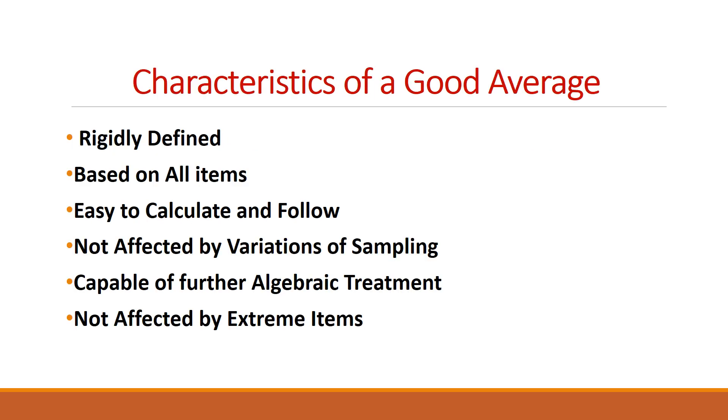Next, let us see what are the features of a good average. A good average is one which is rigidly defined, which means even if different persons are calculating the average, the answer should be the same. It should not differ based on the individual differences. Only such an average is a good one. Such averages are not based on any bias of the investigator. So, only if an average is rigidly defined, we can say that it is a good average.